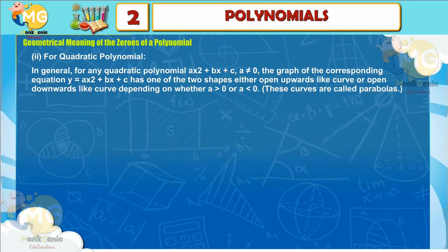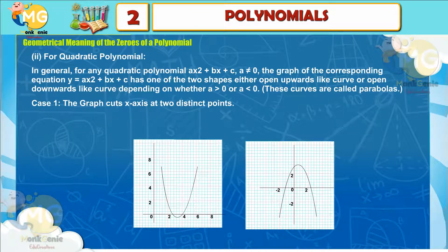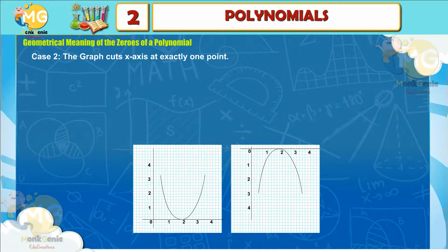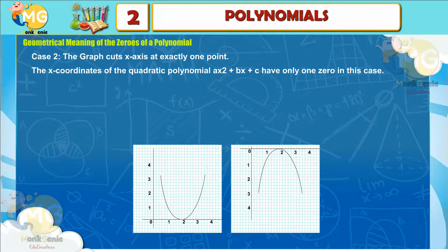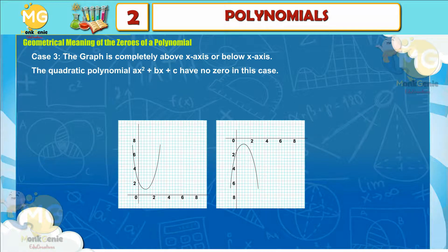For a quadratic polynomial, for any quadratic polynomial ax² + bx + c, a ≠ 0, the graph of y = ax² + bx + c has one of two shapes: either open upwards or open downwards, depending on whether a > 0 or a < 0. These curves are called parabolas. Case 1: the graph cuts the x-axis at two distinct points — the quadratic polynomial has two zeros. Case 2: the graph cuts the x-axis at exactly one point — the polynomial has only one zero. Case 3: the graph is completely above or below the x-axis — the polynomial has no zeros.